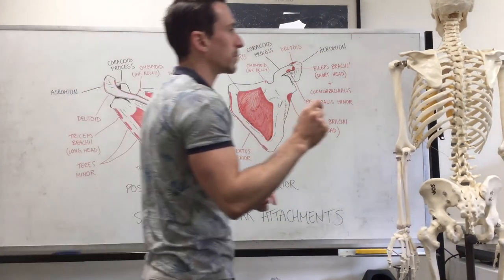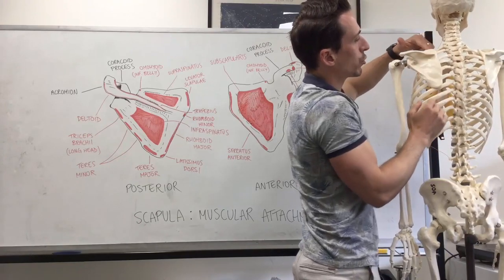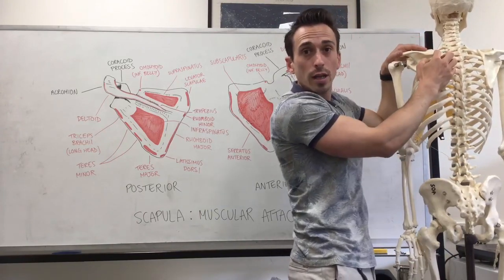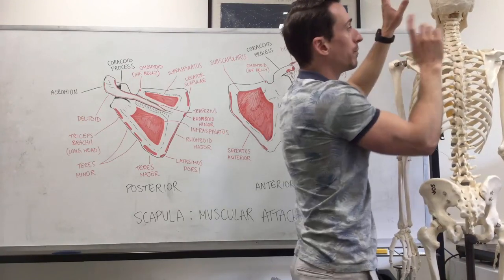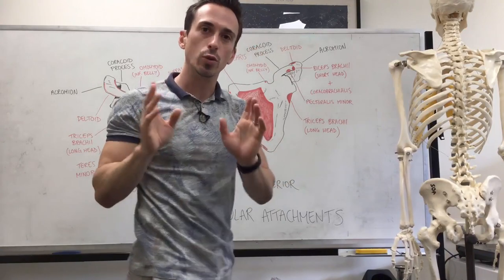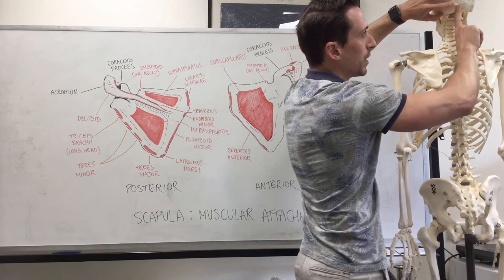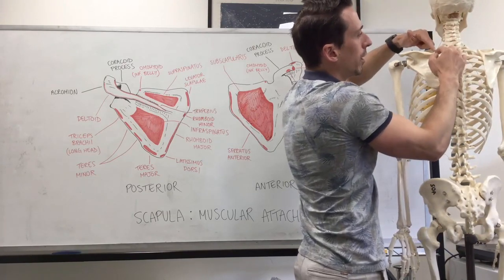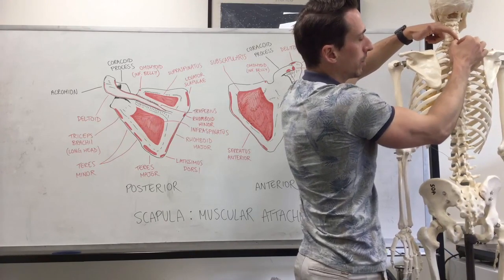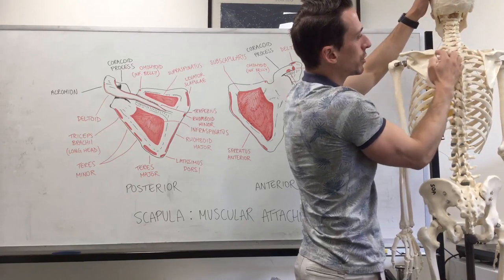The next muscle is rhomboid minor. It has a small attachment at the lower portion of the medial border of the scapula. The upper triangular portion of the medial border belongs to levator scapulae; the lower portion is rhomboid minor's insertion. Its origin is the nuchal ligament — the ligament at the back of the neck you can feel when you drop your head — which runs from the external occipital protuberance down to C6. Rhomboid minor's origin is at the lowest portion of the nuchal ligament and also at C7 and T1, inserting at the medial border of the scapula.